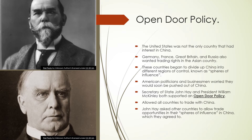The Open Door Policy: the United States was not the only country with interest in China. Germany, France, Great Britain, and Russia also wanted trading rights in the Asian country. These countries began to divide China into different regions of control, known as spheres of influence. American politicians and businessmen worried they would soon be pushed out of China as it was being divided up between all these different countries.